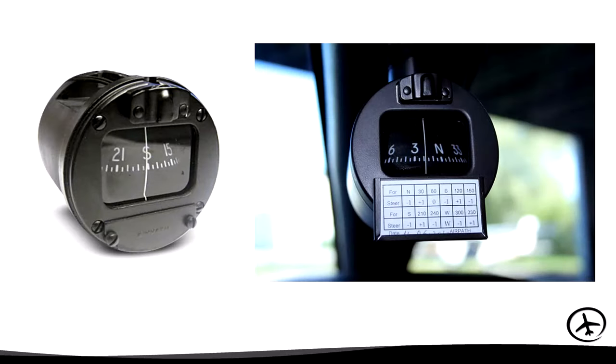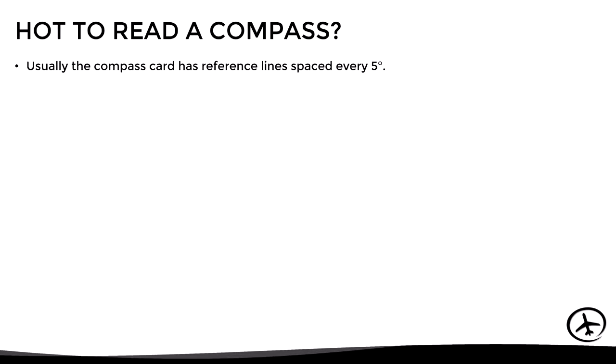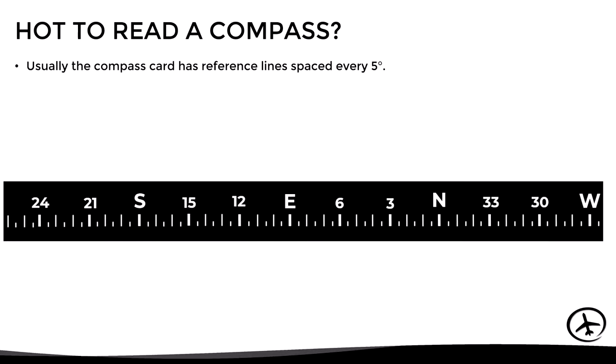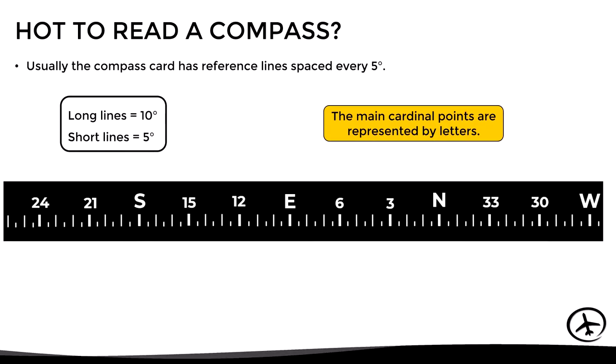This is how we obtain the compass as we know it. Let's now see how to correctly read this instrument. Usually the compass card has reference lines spaced every five degrees so that the long lines represent 10 degrees and the short lines five degrees. Here the main cardinal directions are represented by their corresponding letters: north, south, east, and west. Apart from this, every 30 degrees a number which represents that heading is included in the compass card, omitting the last digit.